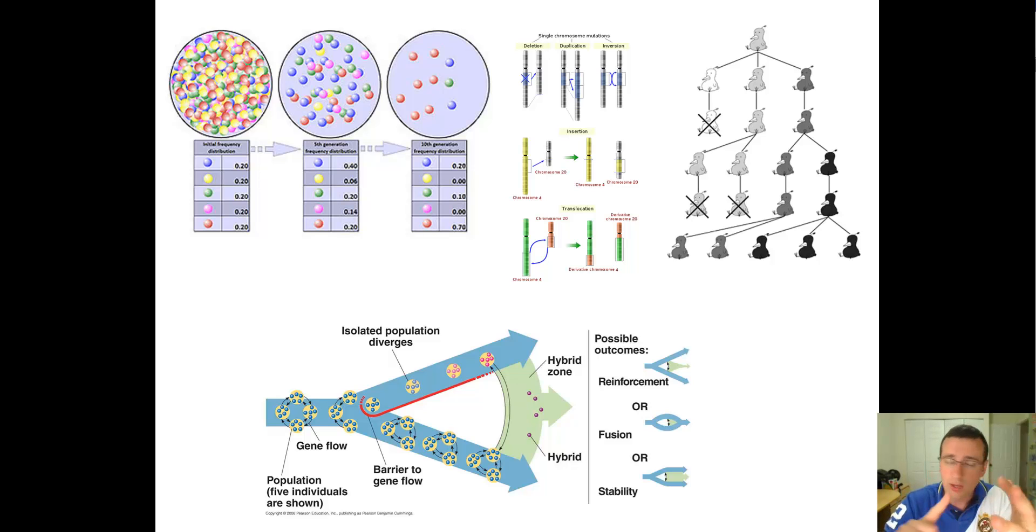For example, mutations. If a mutation happens in one group but not the other, that group can actually change compared to the other group. Also, if selection is different, if the environment is different, if the pressure is different, that will also lead to differentiations.